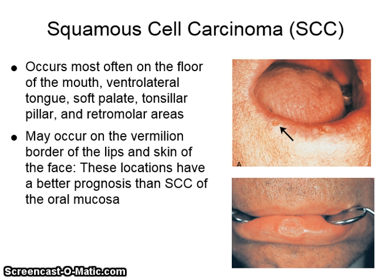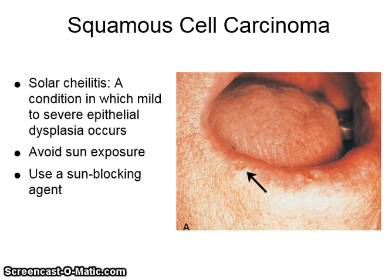Squamous cell carcinoma occurs most often on the floor of the mouth, ventral lateral tongue, soft palate, tonsillar pillar, and retromolar areas. It may also occur on the vermilion border of the lips and skin of the face. These locations have a better prognosis than squamous cell carcinoma of the oral mucosa. Solar cheilitis is a condition in which mild to severe epithelial dysplasia occurs. The patient should be advised to avoid sun exposure and use sun-blocking agents.